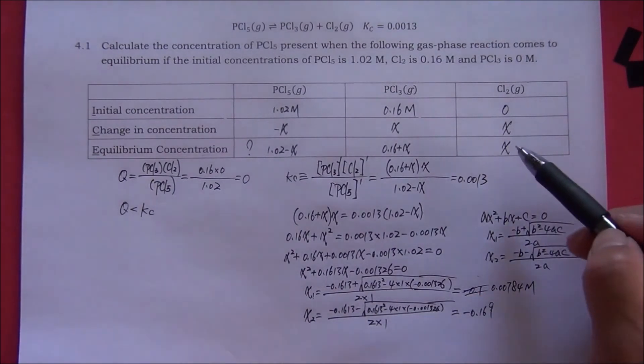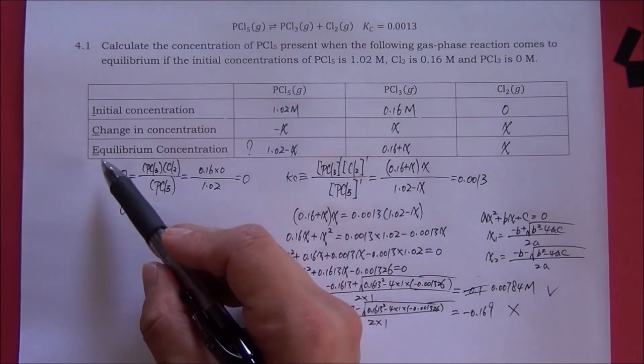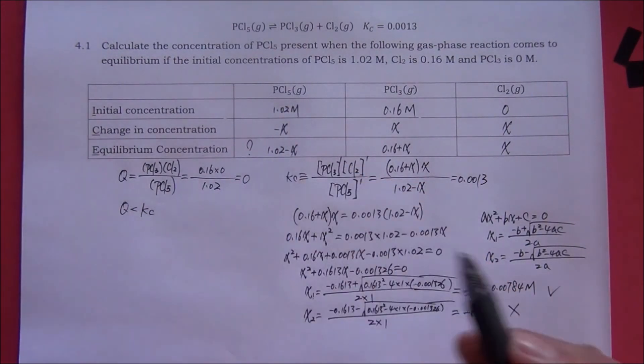Because the equilibrium concentration cannot be a negative number, the second root is not our answer. This one is. Remember, we are looking for the equilibrium concentration of PCl5 gas, not x. So, we need to do one more additional step.